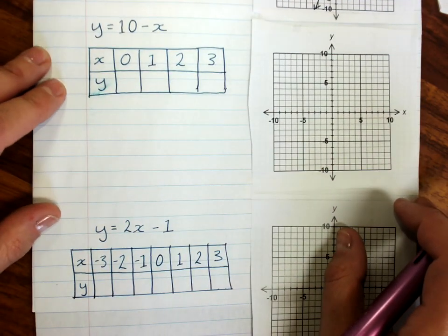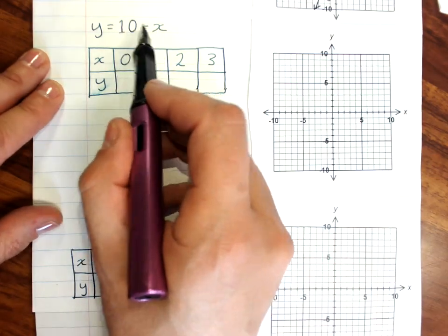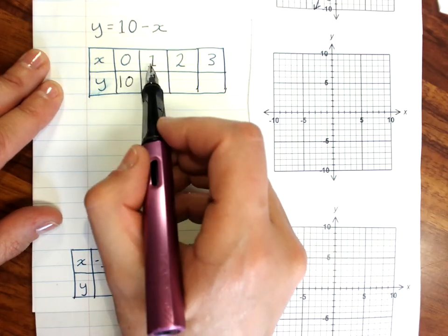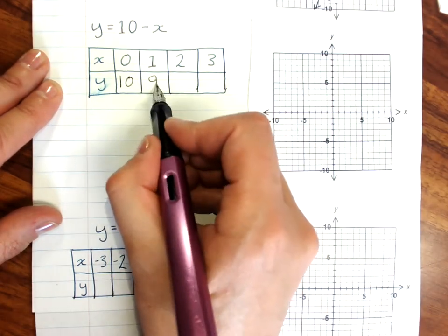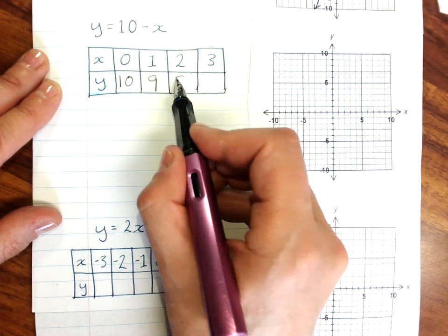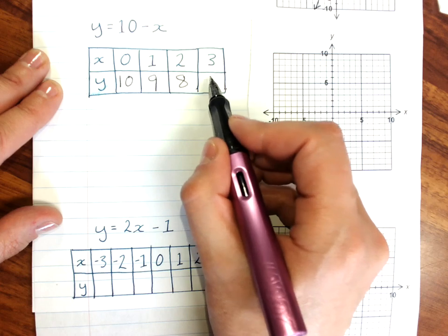This one, y equals 10 minus x. Well, when x is 0, 10 minus 0 is 10. When x is 1, 10 minus 1 is 9. When x is 2, 10 minus 2 is 8. When x is 3, 10 minus 3 is 7.